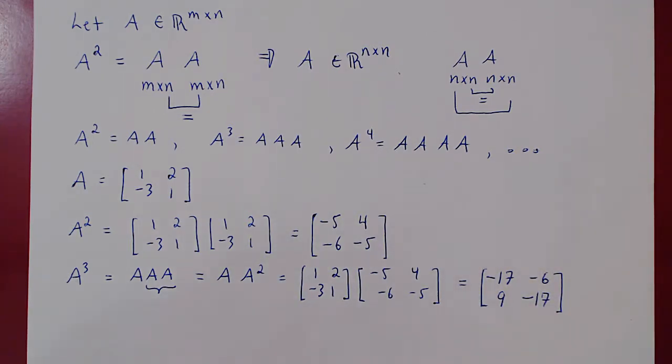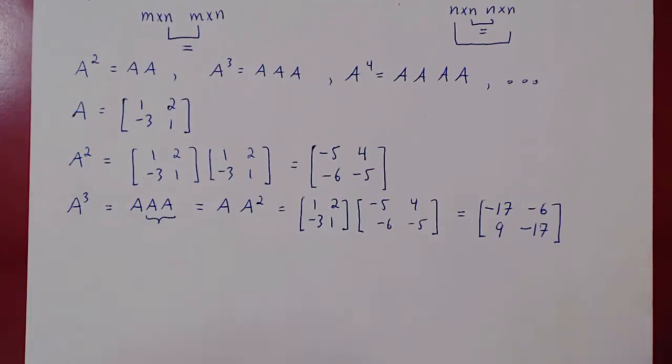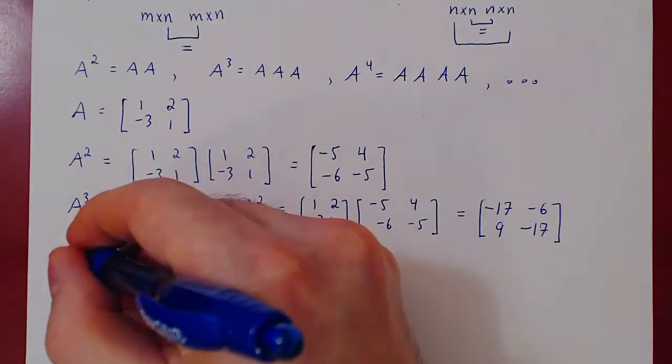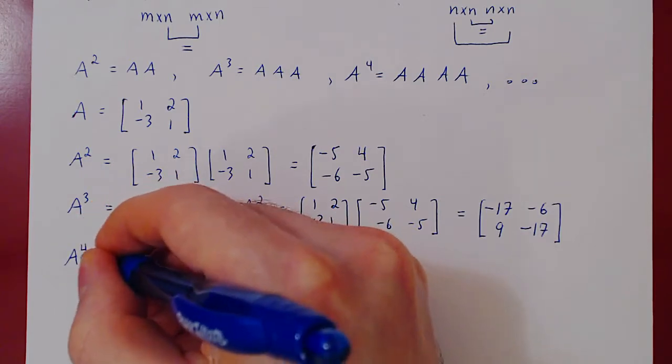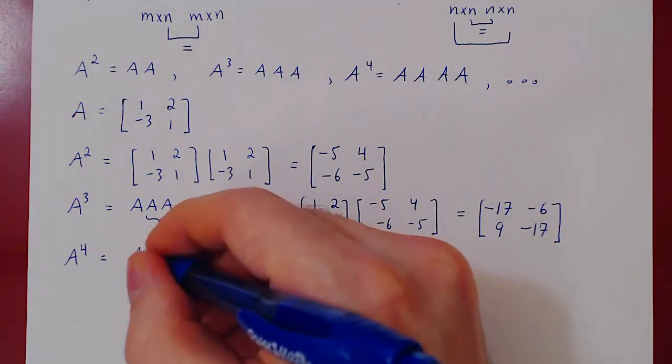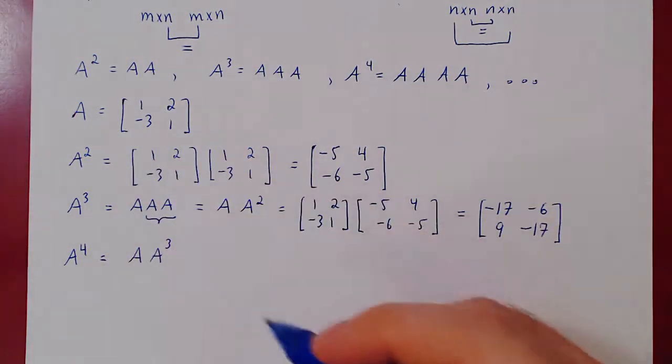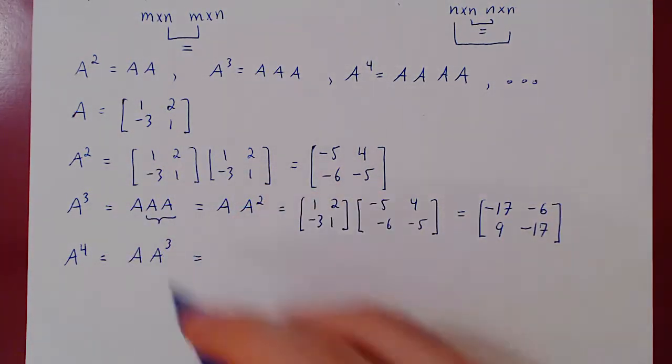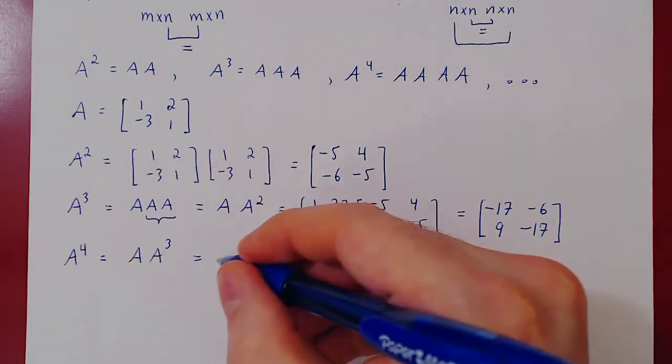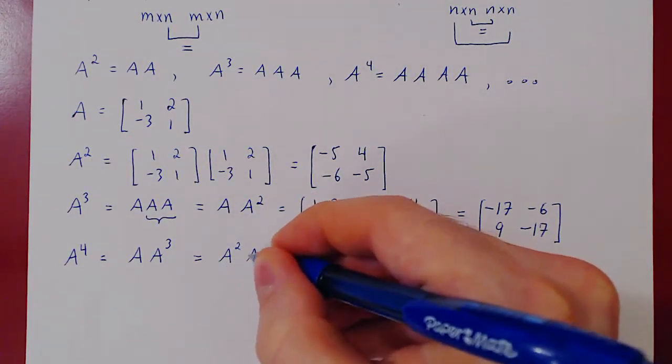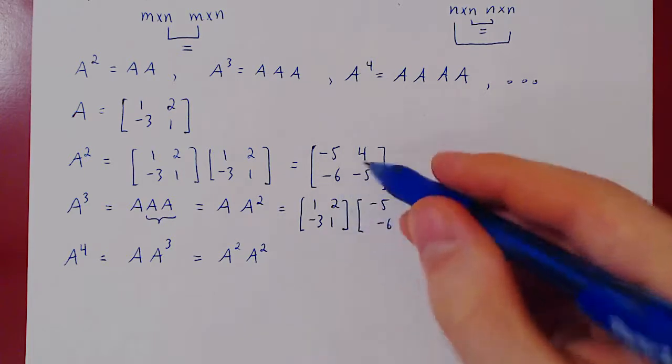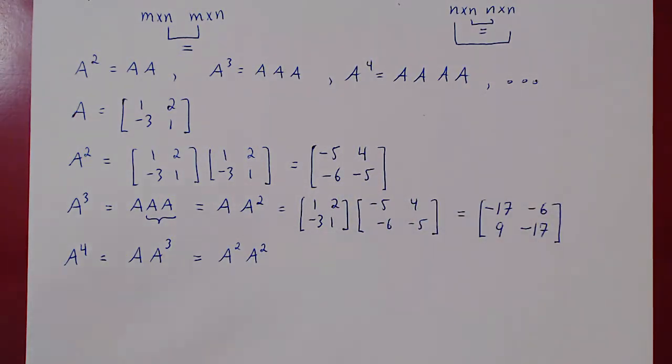We could do a4 in the same way. We won't compute it, but just as a side note, we could compute a4 in two different ways. If you think of it, we could do a times a cubed. We have a cubed, here's matrix A. Or we could also do the square of a squared, we could do a squared times itself, and we would get a to the 4. And that's it. This is how you can take powers of any square matrix.